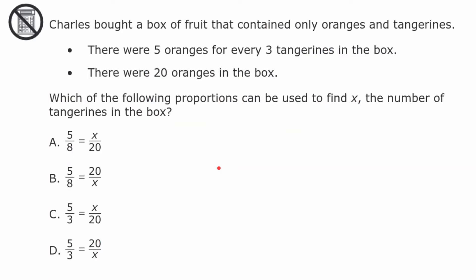This is the first question. What I'm going to ask is that I'm going to read the question, and then I am going to ask you to pause and come back and hit play when you're ready to check your work. Charles bought a box of fruit that contained only oranges and tangerines. There were five oranges for every three tangerines in the box. There were 20 oranges in the box. Which of the following proportions can be used to find x, the number of tangerines in the box? Go ahead and pause and come back when you're ready.